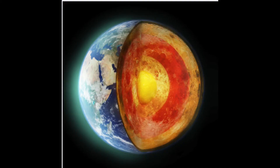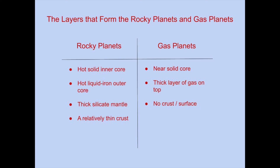The layers that form the rocky planets and gas planets. Rocky planets share an almost identical structure, with a solid, hot inner core, an equally hot thick liquid iron outer core, followed by a huge layer of solid mantle composed of silicate metals, and a relatively thin layer of crust on top, which is also the surface of rocky planets and the layer we stand on.